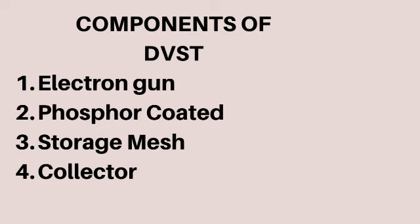The primary gun is used to store the picture pattern, and the flood gun is used to maintain the picture display. Both have their own specific roles. The next component is the phosphor-coated screen. Just like CRT, in DVST the inner surface of the CRT is coated with phosphor crystal, so that when light is emitted and a beam of electrons strikes it — and the phosphor used in DVST has very high persistence.